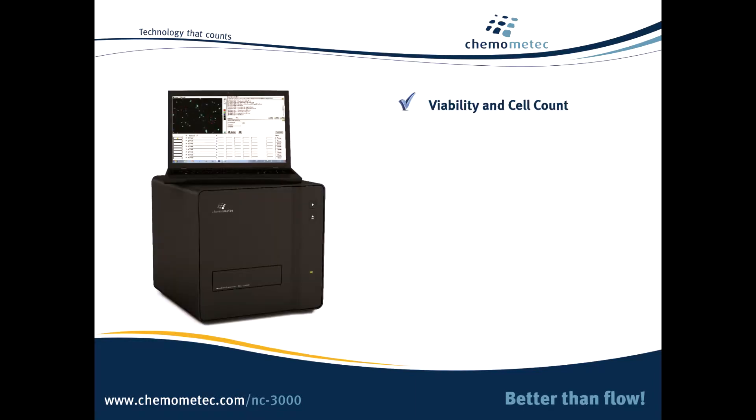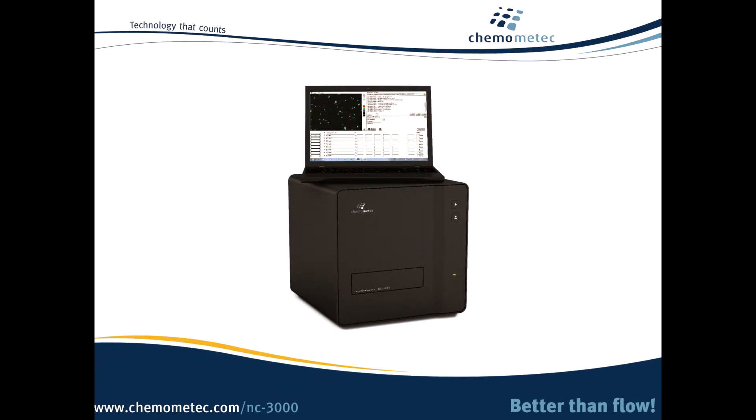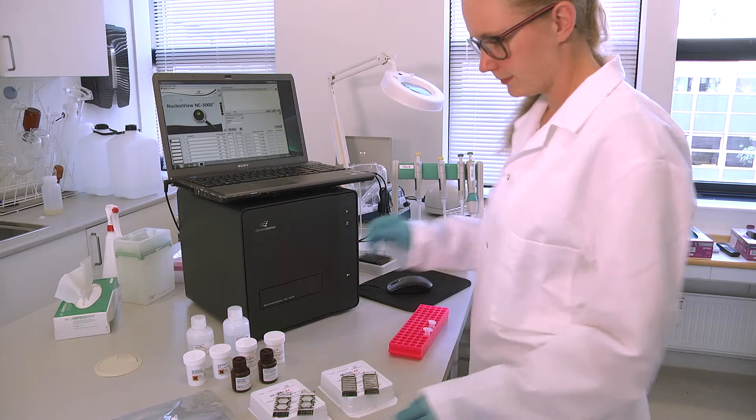From simple cell counting to cell cycle, vitality, annexin 5, caspase, mitochondrial potential, DNA fragmentation, and your own custom-designed assays, the NC3000 does it all in less time and with a small footprint.